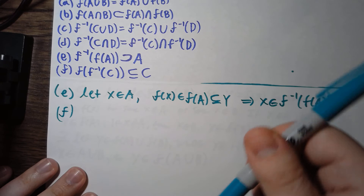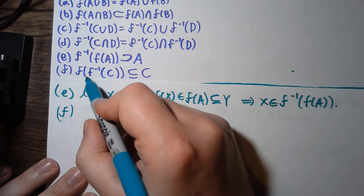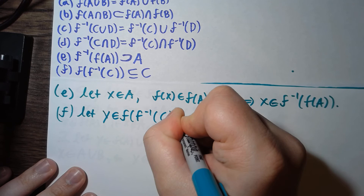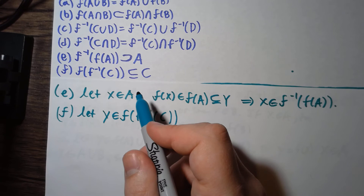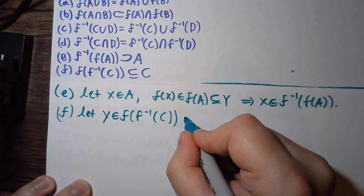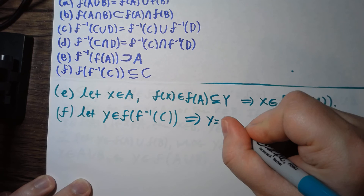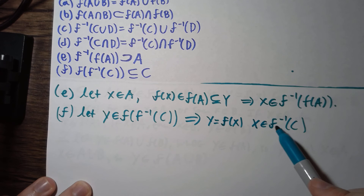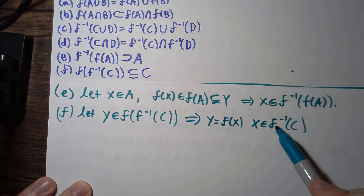For part f, we want to do something very similar, but now we're dealing with C, which will be an element of Y, some subset of Y. Let y be an element of f of f inverse of C. We want to show that y is actually contained in C. Since y is in f of f inverse of C, this implies that y is equal to f of x, where x is an element of f inverse of C. What does it mean for x to be in f inverse of C? That just implies that f of x is an element of C. But f of x is equal to y, so that just means that y is in C, and that's what we wanted to show.